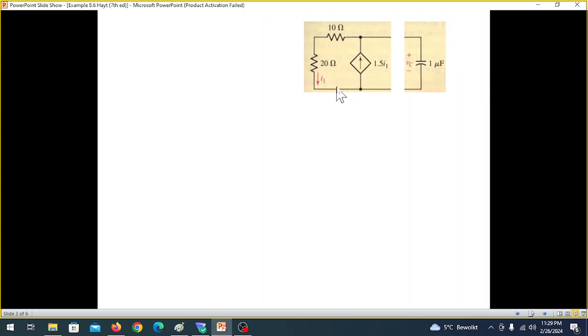I hope you also know that if there's a dependent source in a circuit, the Thevenin voltage is easily found. But its Thevenin resistance, we cannot find easily. For that, we have to connect a test current source or a test voltage source.